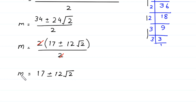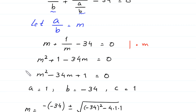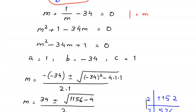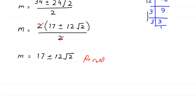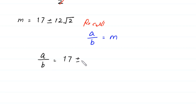This is the value of M. Recalling that we supposed A over B equals M, we conclude that A over B equals 17 plus or minus 12 times square root of 2. This is the required value of A over B and the final answer.